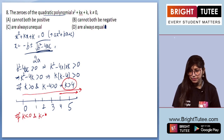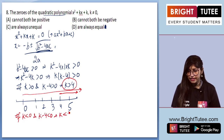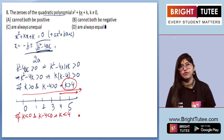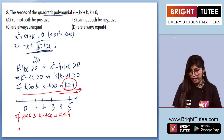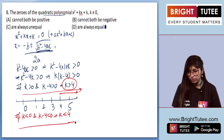Now for the second case: what if both k and (k − 4) are less than 0? That gives k < 0 and k < 4. Let's check this on the number line.